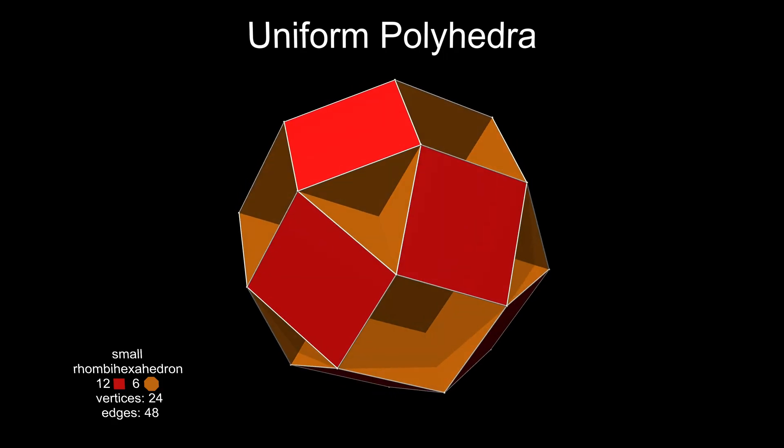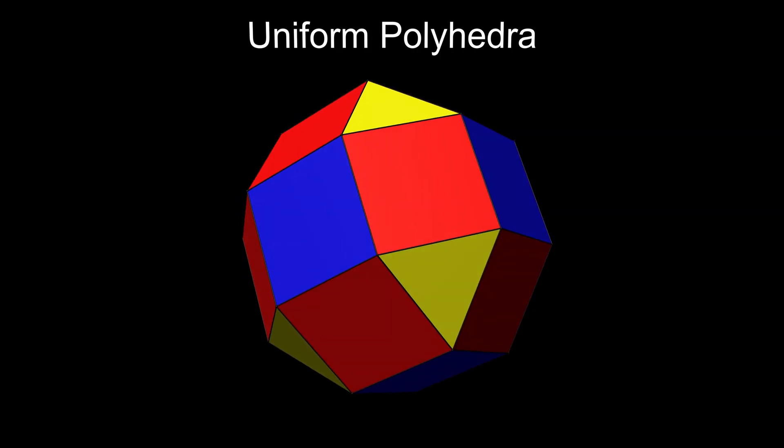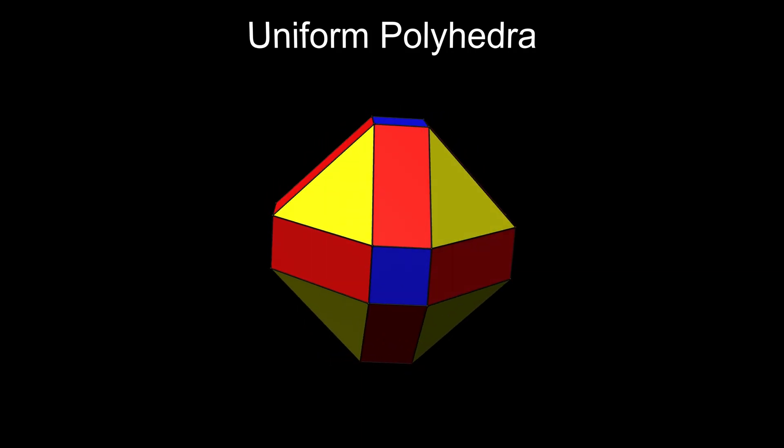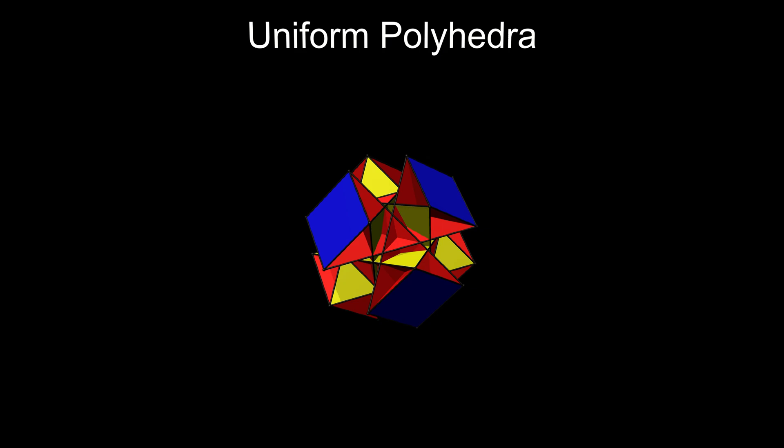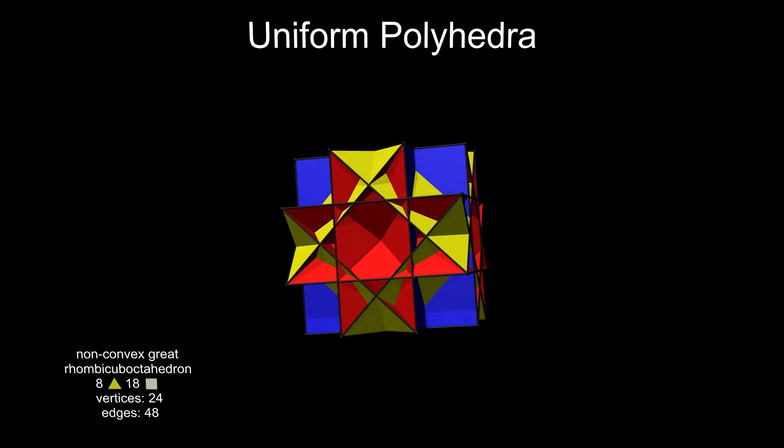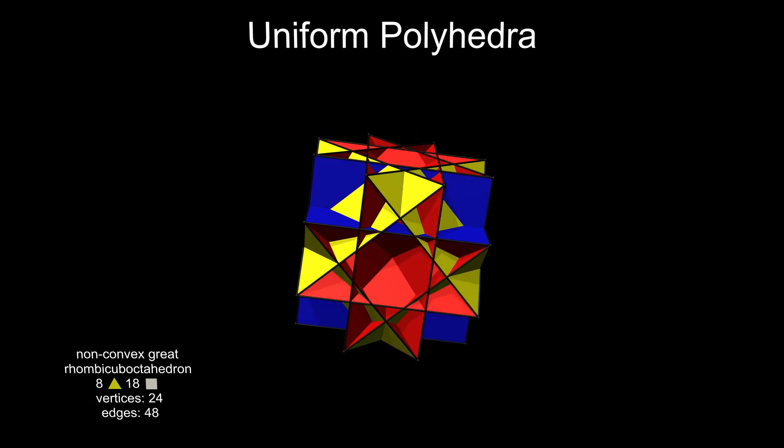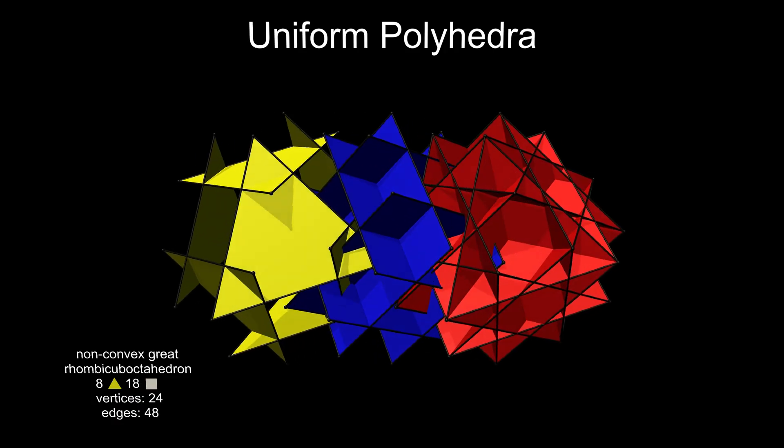One other figure can be constructed from the rhombicuboctahedron. If you move all the triangles inwards, through the centre and out the other side, you get a shape called the non-convex great rhombicuboctahedron. In the same way as the previous figure, this is topologically identical to the rhombicuboctahedron. Again, separating the different face types gives a clearer idea of how it fits together.